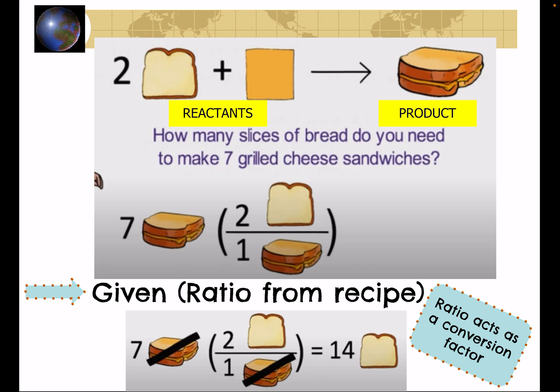You would take the given, the seven grilled cheese sandwiches, and multiply by a fraction, a ratio. The ratio is what we call a conversion factor, and it's a mole ratio. Two over one. Where did that come from? If you look at the equation up above here, the two came from the bread and the one came from how many sandwiches you make. Two over one are the coefficients from the balanced equation or the recipe.